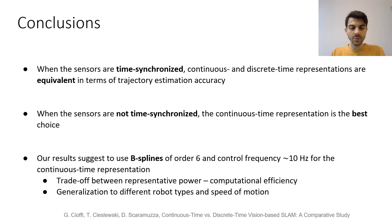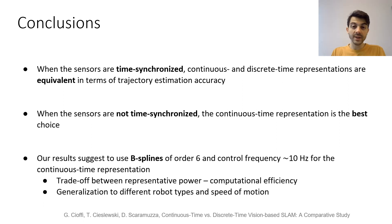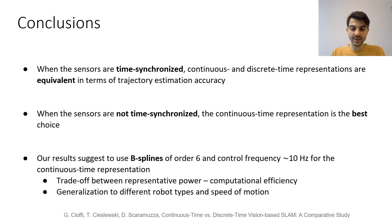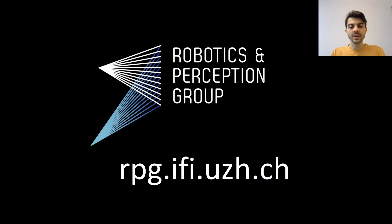To conclude: when the sensors are time-synchronized, continuous time and discrete time produce similar results in terms of trajectory accuracy. When the sensors are not time-synchronized, the continuous time representation is the best choice. We also suggest using a B-spline of order 6 and a control frequency of around 10 Hz to represent the camera trajectory when using continuous time SLAM. Thank you for listening.